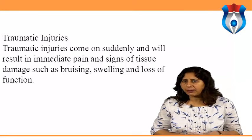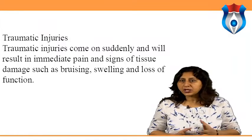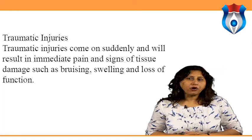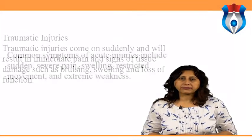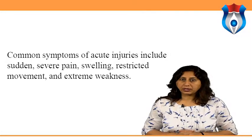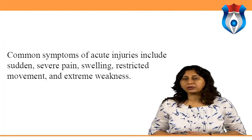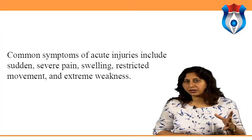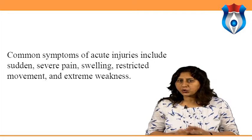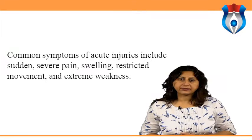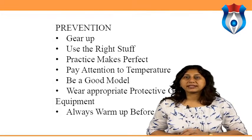Traumatic injuries come on suddenly and will result in immediate pain and signs of tissue damage such as bruising, swelling and loss of function. They are often the result of contact during sport and can happen whether or not there has been a careful warm-up. Common traumatic injuries include bruising or cuts, sprains (such as ankle or wrist sprain), fractures or broken bones, and dislocations when a joint pops out. Common symptoms include sudden severe pain, swelling, restricted movement, extreme weakness, and there may also be obvious signs of a dislocation or broken bone.